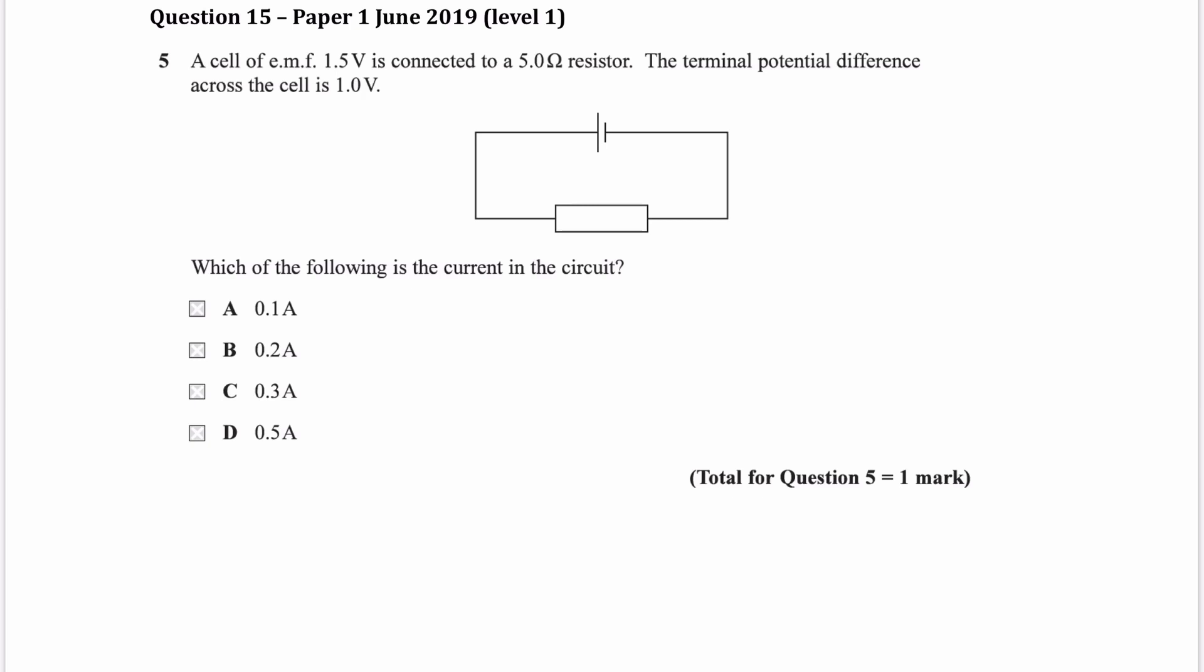A cell of EMF 1.5 volts is connected to a 5 ohm resistor. So this is 5 ohms, and we're told the terminal potential difference across the cell is 1 volt. That's the same thing as the voltage across the external component, that's what terminal PD is, so this is 1 volt.